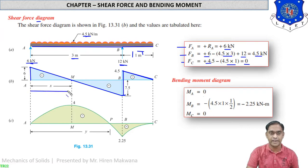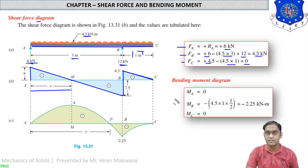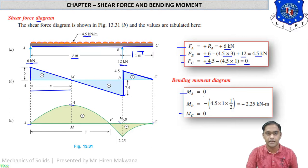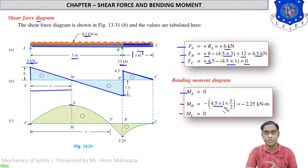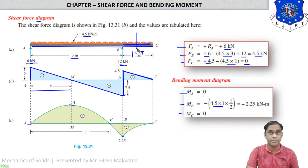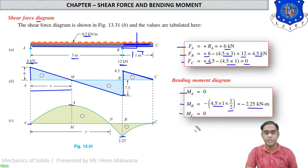For the bending moment diagram, at the first and last points A and C the bending moment is zero. We need to calculate the bending moment at point M and point B. Taking the moment at point B from the right side: only the UDL of 4.5 × 1 meter is acting, downward (negative), at the center of BC which is half a meter from B. So BM at B = -(4.5 × 1 × 0.5) = -2.25 kNm.